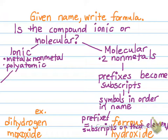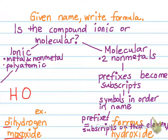Let's do dihydrogen monoxide first. Is the compound ionic or molecular? Hydrogen and oxygen — oxide is oxygen — are both non-metals. Hydrogen is a little weird but in this case it's a non-metal, so this is a molecular compound. My prefixes become subscripts: write hydrogen first, then oxygen. The prefix di means two, mono means one — so we don't write the one. Dihydrogen monoxide is the chemical name for water, H₂O.